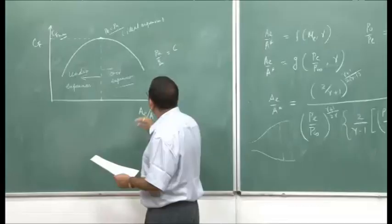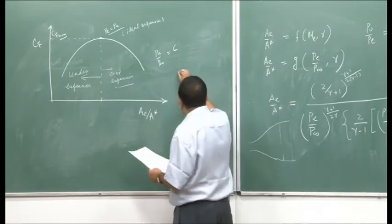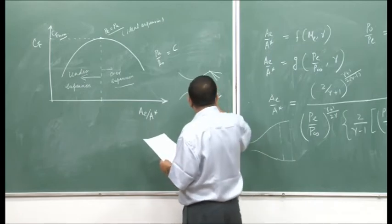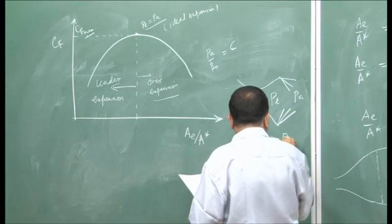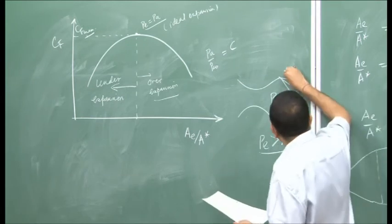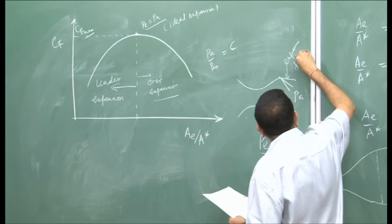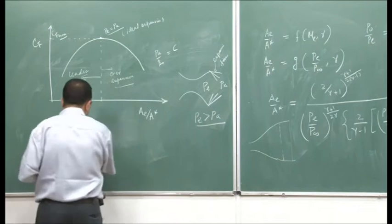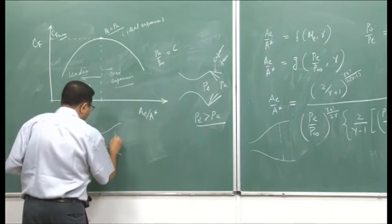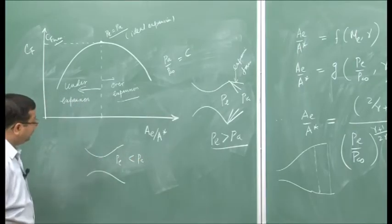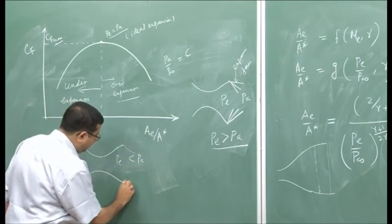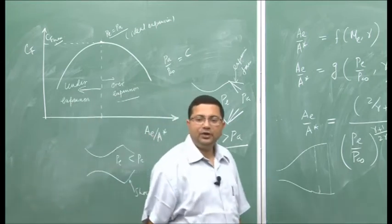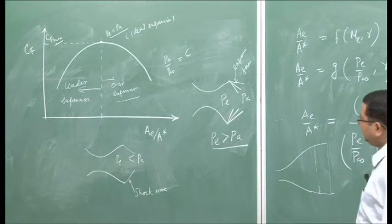For under-expansion, Pe > Pa, so expansion fans are needed to further expand the flow to atmospheric pressure. For over-expansion, the exit pressure is less than atmospheric, so a shock wave or compression wave is needed to increase the pressure back to Pa. This is why over-expanded nozzles produce oblique shocks at the exit. Both discussions confirm the behavior we already analyzed qualitatively.